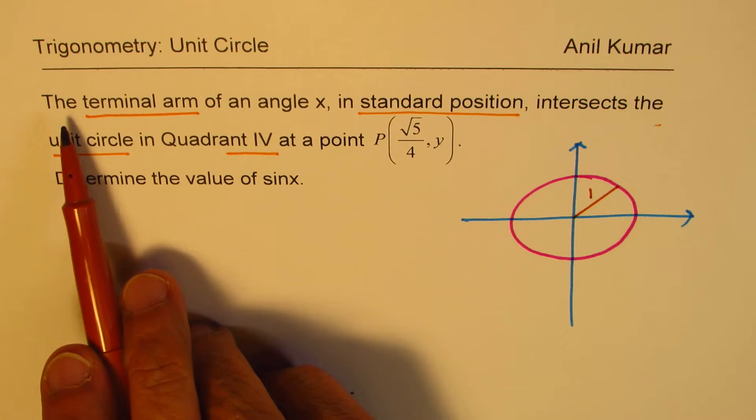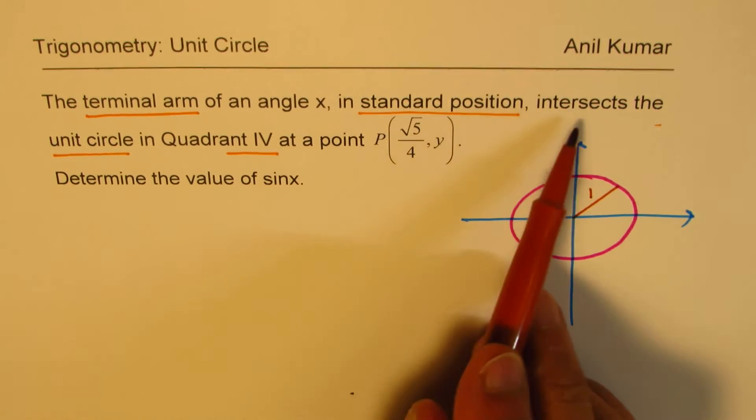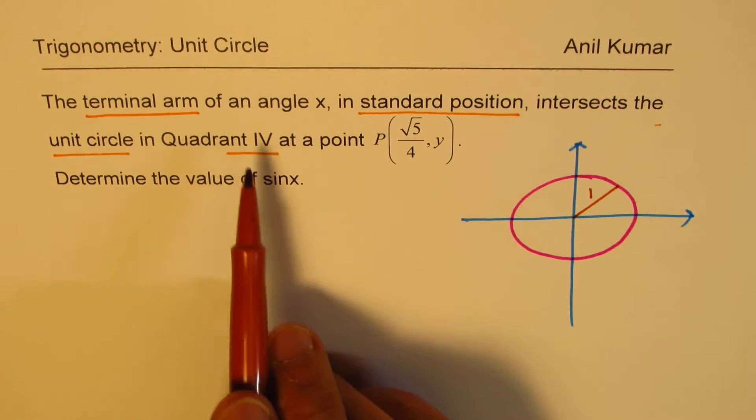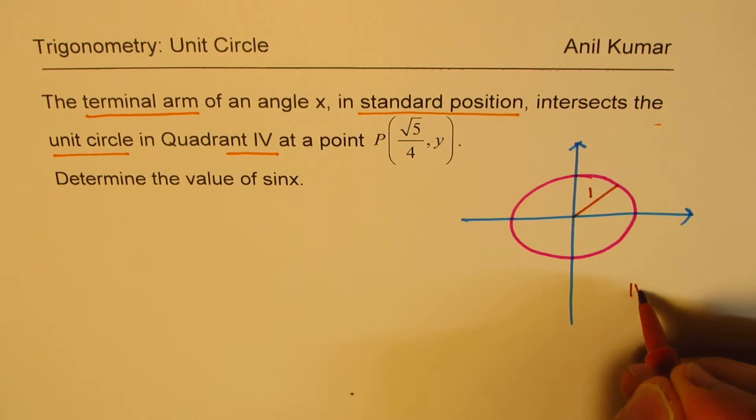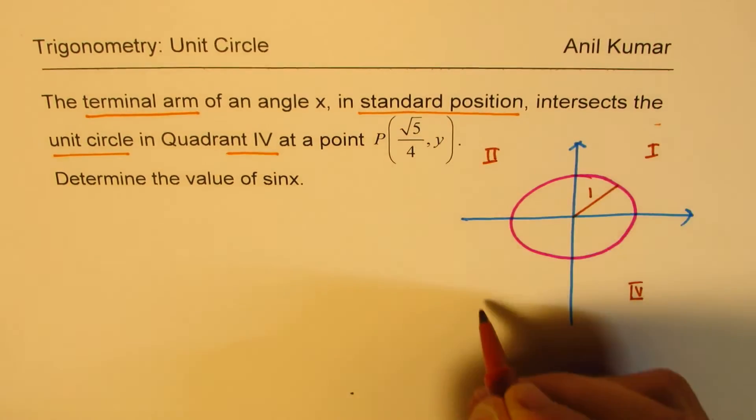We are saying the terminal arm of an angle X in standard position intersects the unit circle in quadrant 4. So this is your quadrant 4. That is quadrant 1, 2, 3 and 4.